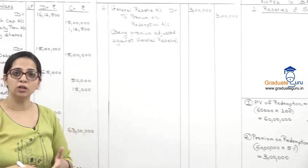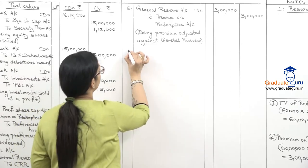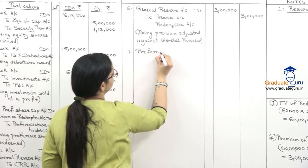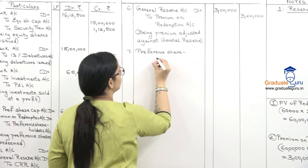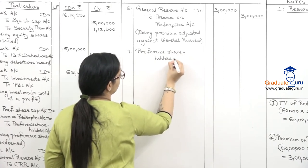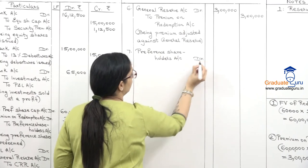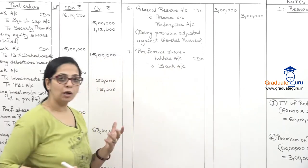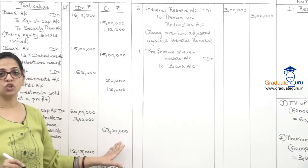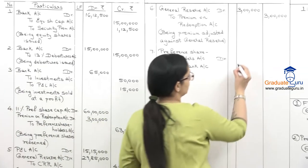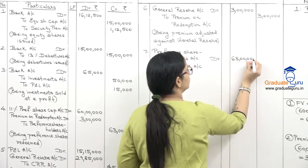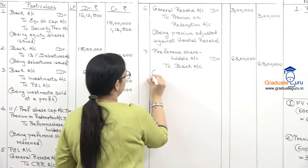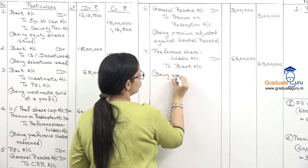Entry 7 — Payment to preference shareholders: Preference Shareholders Account Dr. 63 lakhs, to Bank Account 63 lakhs. The total amount payable to preference shareholders is 63 lakhs. Being amount paid to preference shareholders.